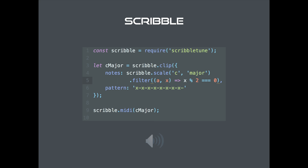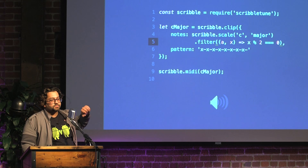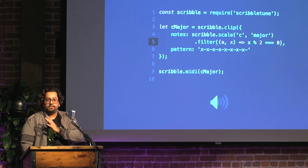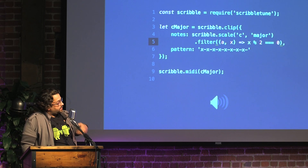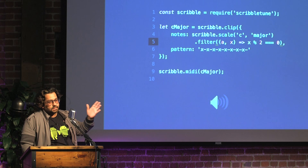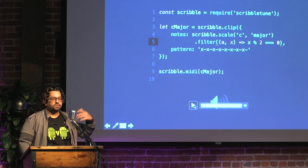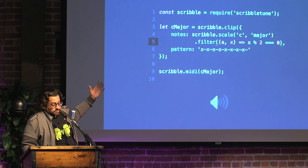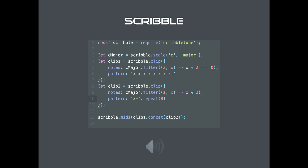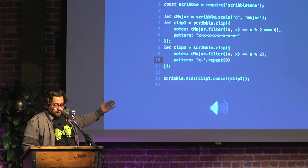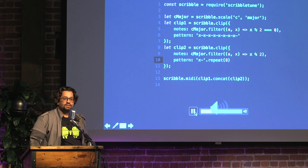What I'm doing here is calling `scribble.scale('C major')` and putting a filter on top of that — taking only the alternate notes using `x % 2 === 0`. That gives me C, E, G, B — every other note from the C major scale. Since it's an array, I can create two clips: one with even-indexed notes and one with odd-indexed notes. I can concatenate them and export as MIDI.